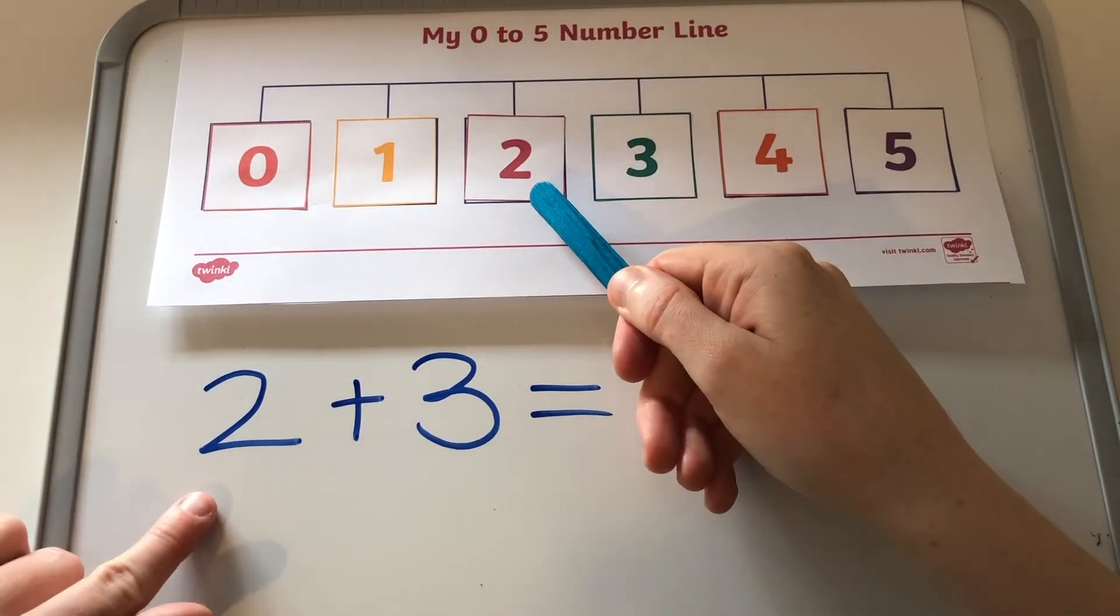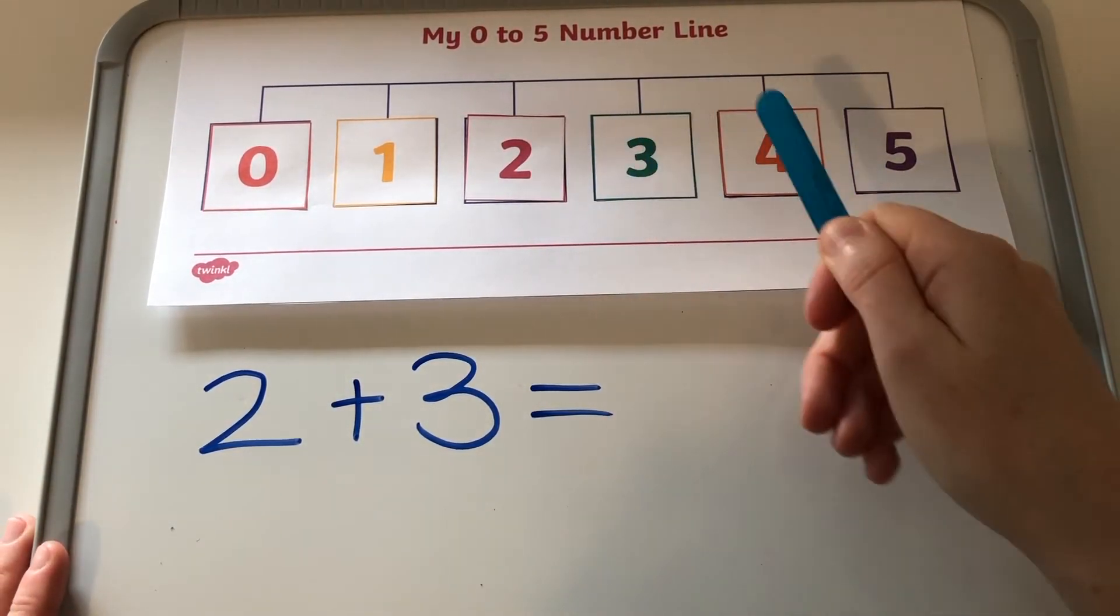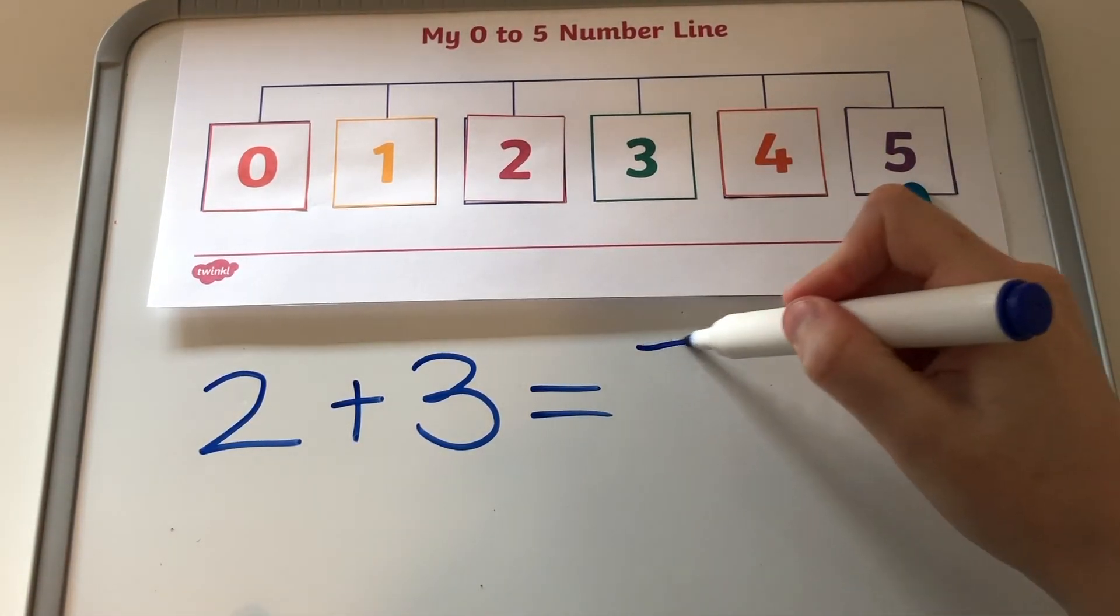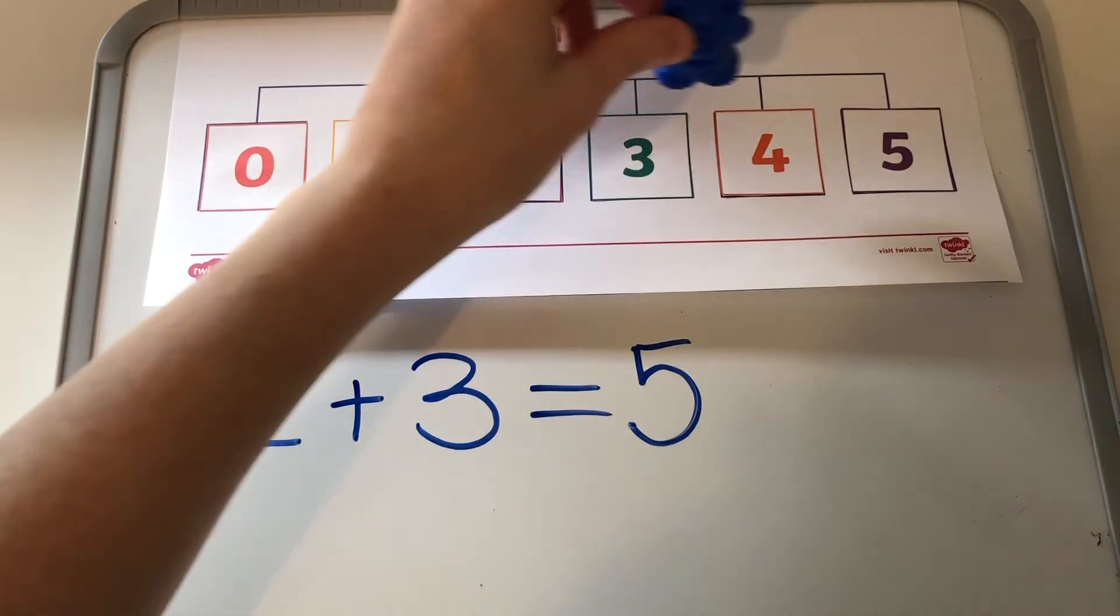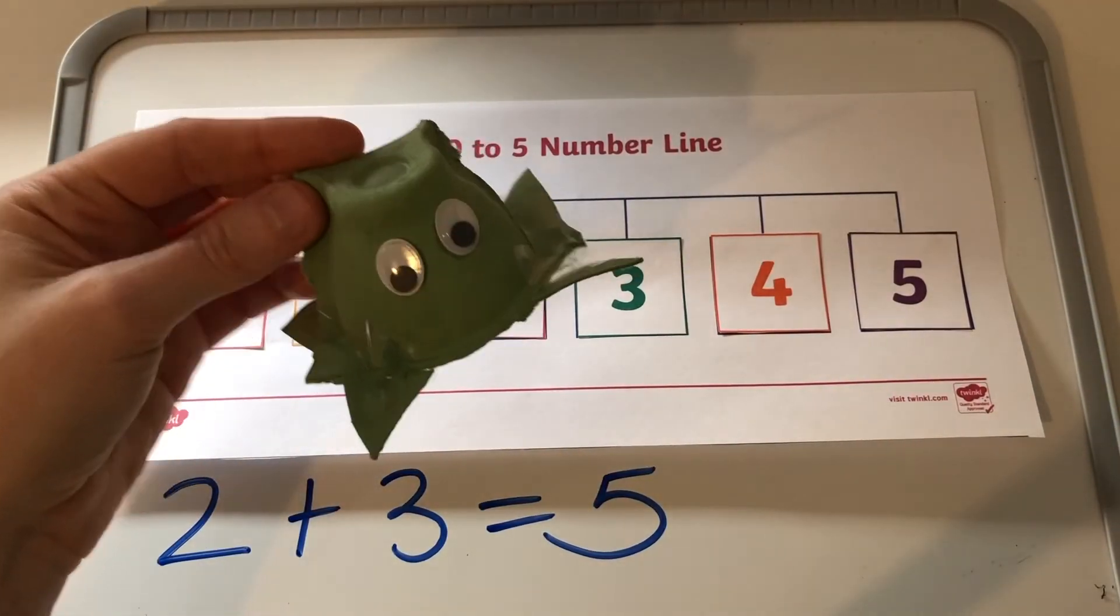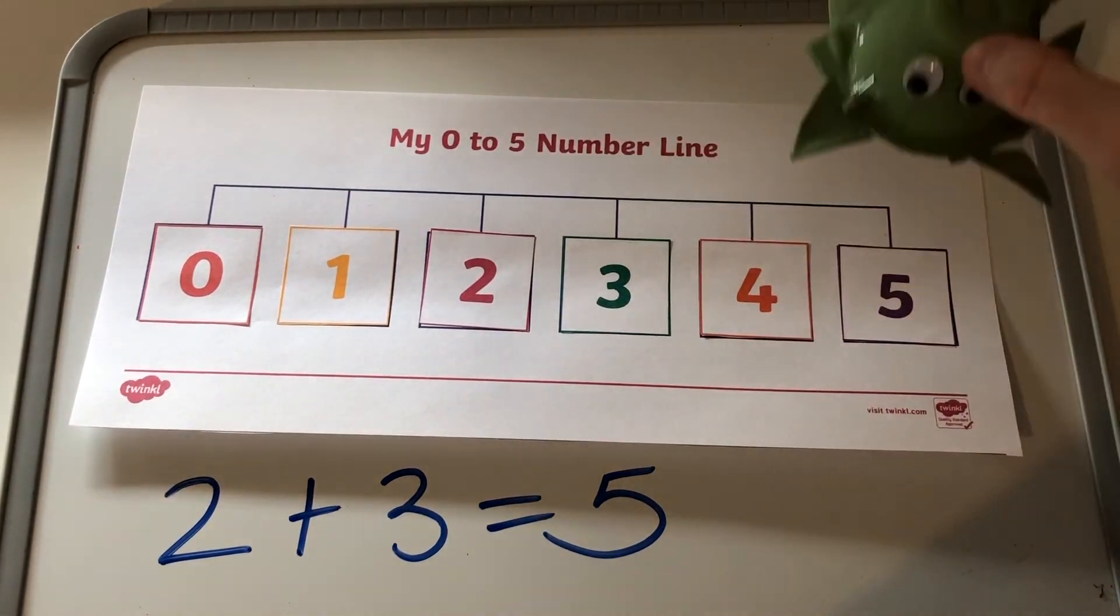When it comes to adding slightly bigger numbers, children can use a pointing object such as a lolly stick to keep their place. They could also use a small toy. An animal that's known for jumping or leaping would be particularly helpful.